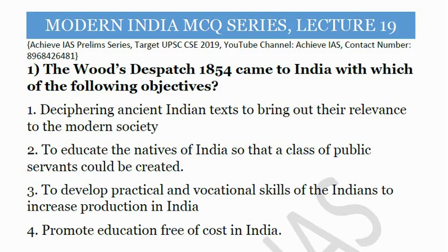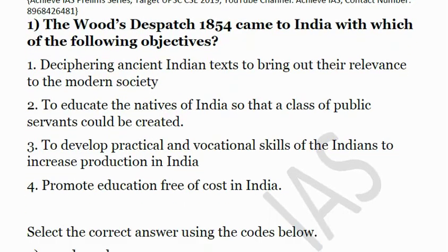The first question: Wood's Dispatch 1854 came to India with which of the following objectives? First, deciphering ancient Indian texts to bring out their relevance to modern society. Second, to educate the natives of India so that a class of public servants could be created. Third, to develop practical and vocational skills for Indians to increase production. Fourth, to promote education free of cost in India. Which of the following statements are correct?